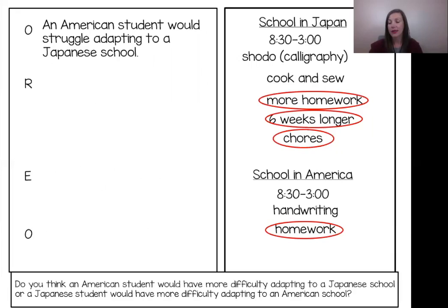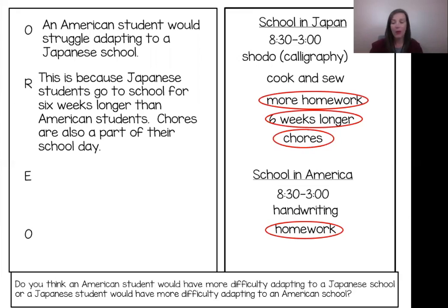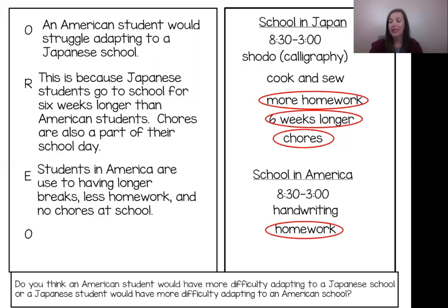Next, we have R for reason. Remember, I found my reasons in the passage and wrote them in the notes. Let's look back at the notes. This is because Japanese students go to school for six weeks longer than American students. Chores are also a part of their day. Next is E, for example — I need to connect my information about an American school and a Japanese school. I need to give an example of school in America. Students in America are used to having longer breaks, less homework, and no chores at school.